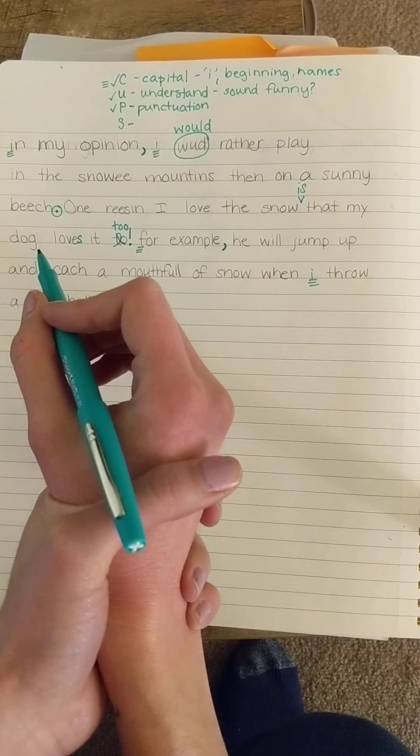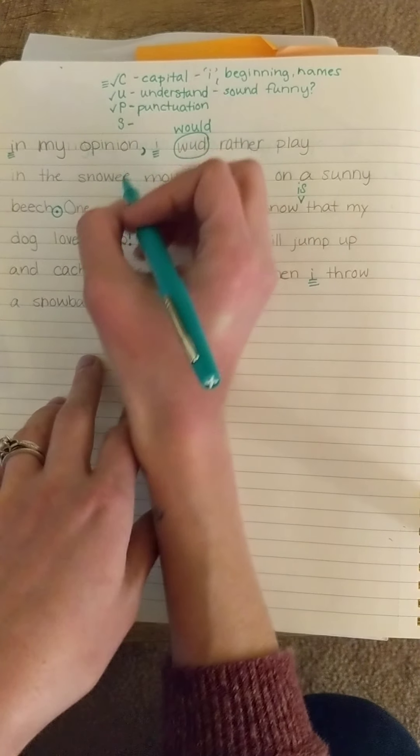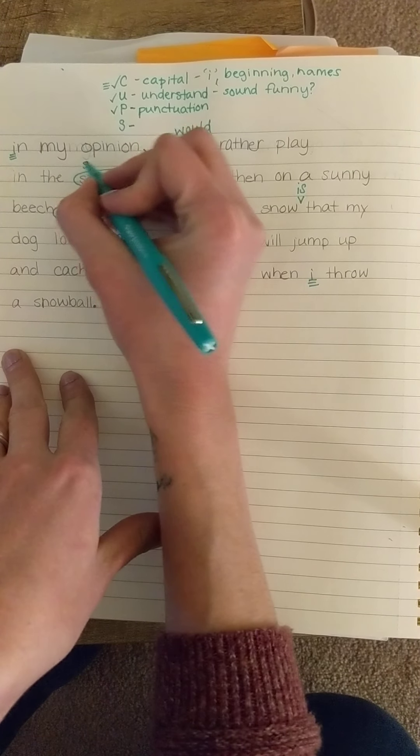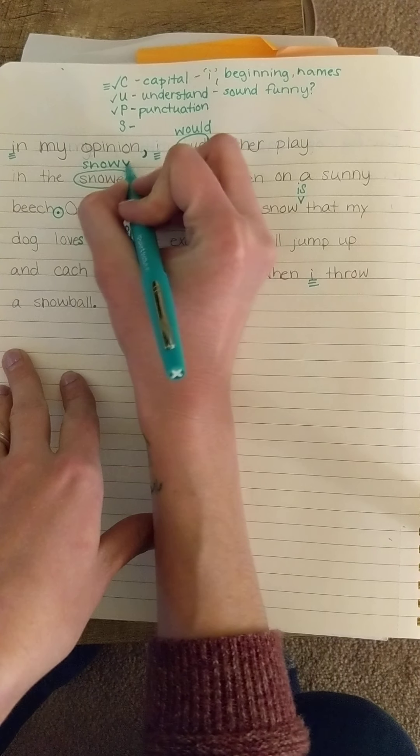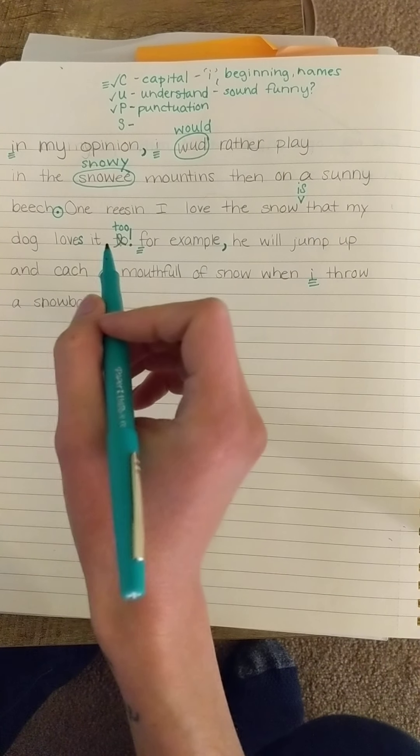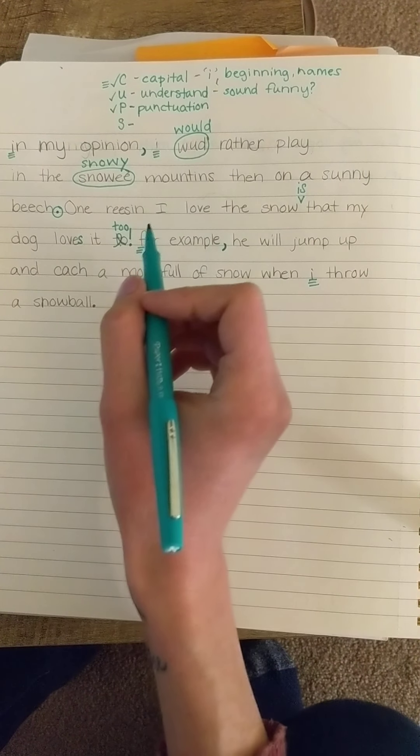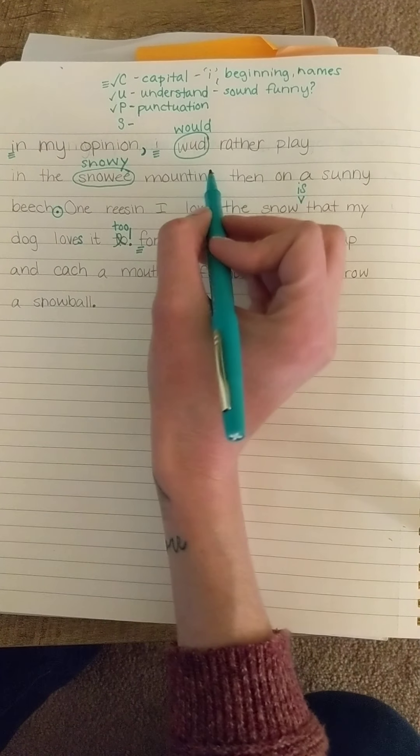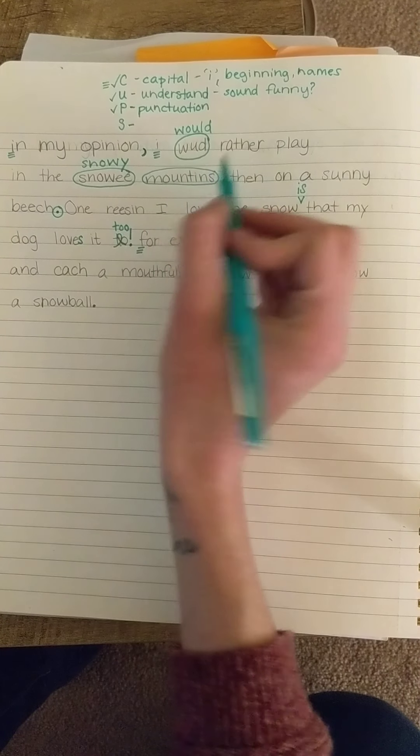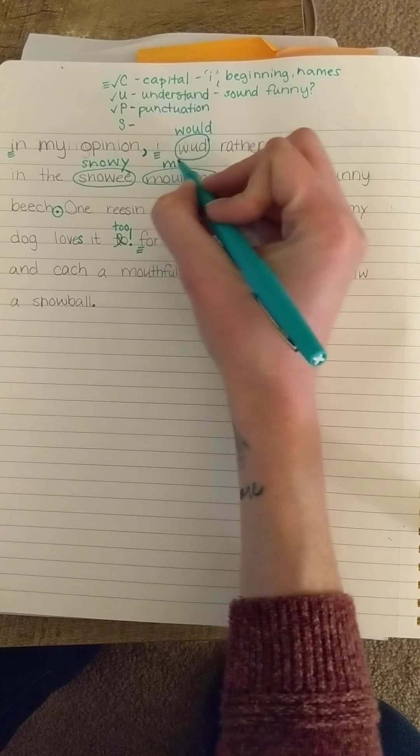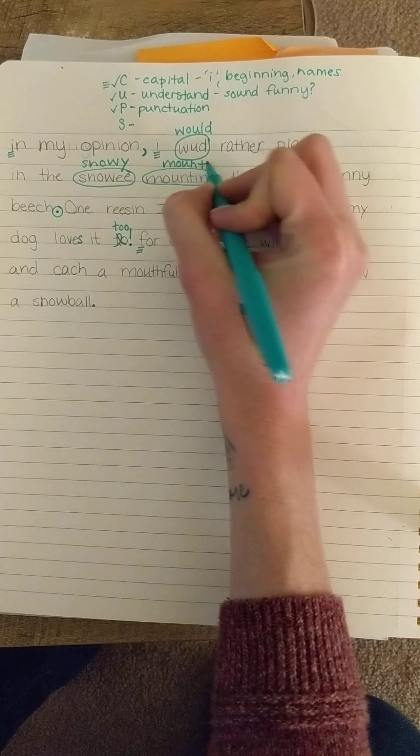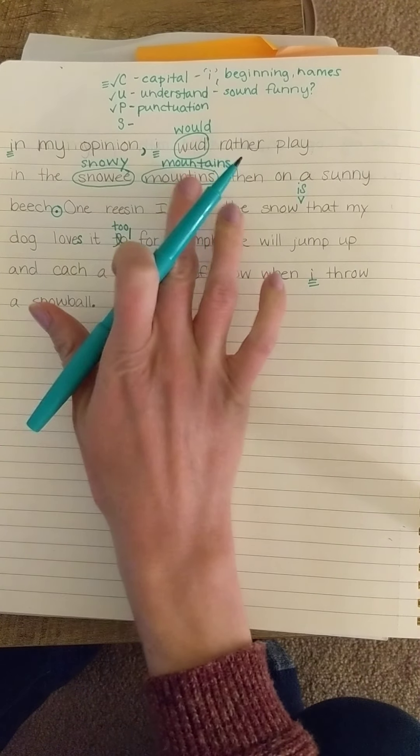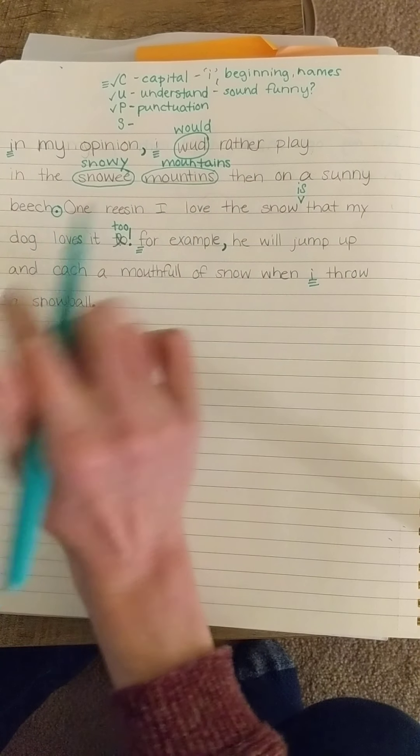I would rather play in the snowy mountains. Snowy. That looks really funny. I'm going to circle that. I know if we want the E sound at the end of a word, we can put a Y, not a double E and not the letter E by itself. Y. Snowy. Mountains. That one's not spelled right either. We spell mountains like Mount Ames. That one's a weird one, but a parent could probably catch that and say you need to look that one up.